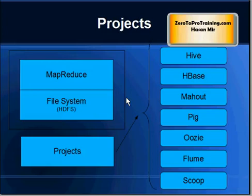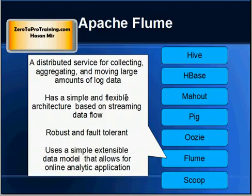Here are the names of the popular projects that fall under the umbrella of Hadoop: Hive, HBase, Mahout, Pig, Oozie, Flume, and Sqoop. Apache Flume, as the name suggests, is an application for collecting, aggregating, and moving large amounts of log data. It is a distributed service and it is based on a simple, extensible data model.